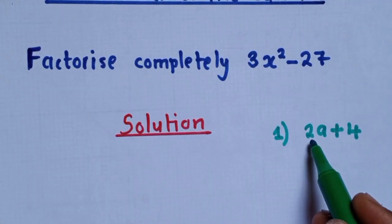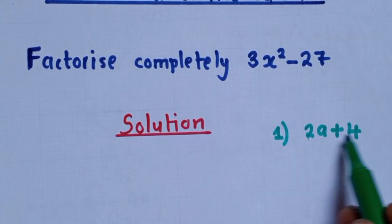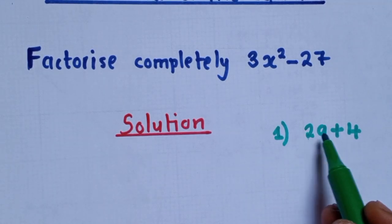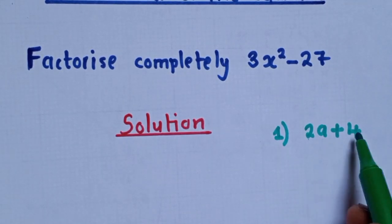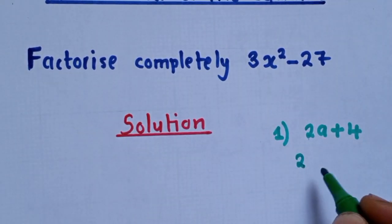Your job would be to check what is it that is found here and here. Or what can go into 2a, and the same thing can also go into 4. That is a 2.